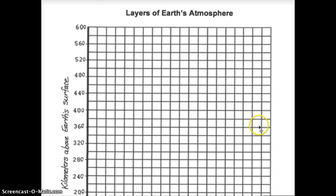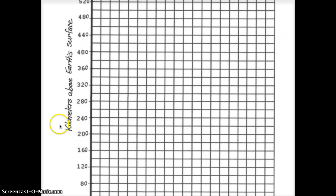It will look like this. So it's a graph that already has a title and already has a y-axis showing kilometers above Earth's surface, so that shows altitude. Notice each line represents 20 kilometers.